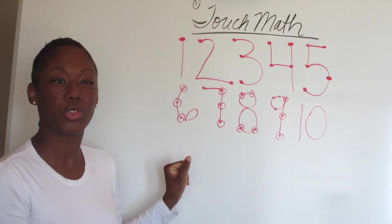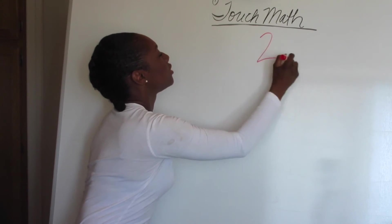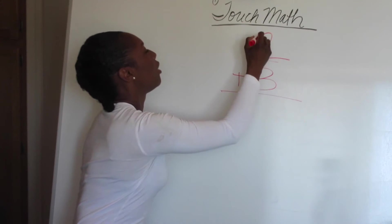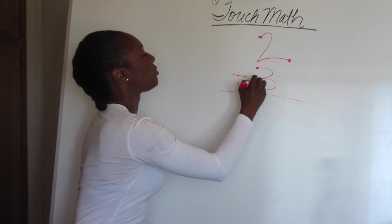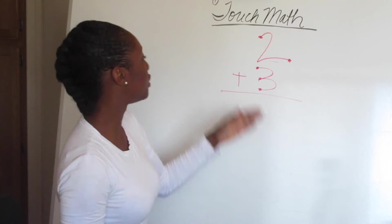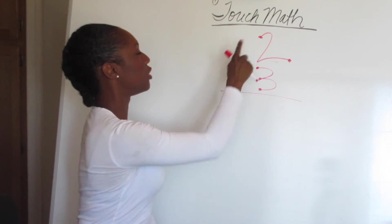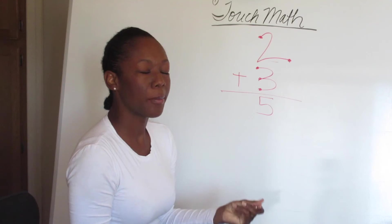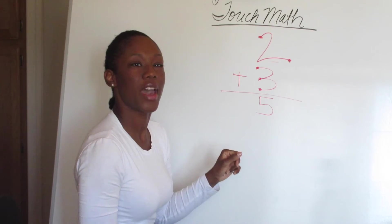Now let's go to some examples. First example, two plus three. Where are the dots? Instead of going, you always start with two, you start with the first number. Instead of going two, three, four, five, no. You go two, three, four, five. Once you memorize where the dots are, the faster you can do the touch math.